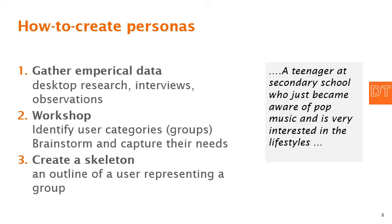Once we have that data, we can have a workshop — don't do it on your own, do it together with a team. The first thing you do is identify different user categories and groups, brainstorm, and try to see what they may need. Once you have a couple of those groups, you're going to create skeletons. A skeleton is an outline of a user representing that group — for instance, a teenager at secondary school who just became aware of pop music and is very interested in lifestyles.